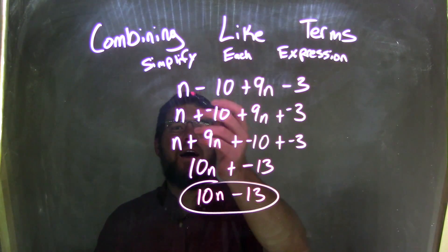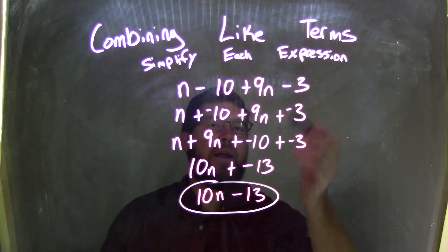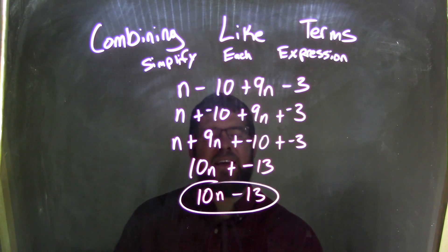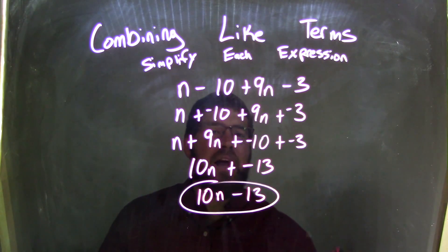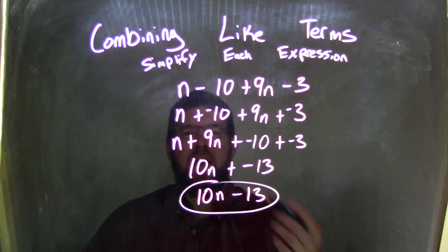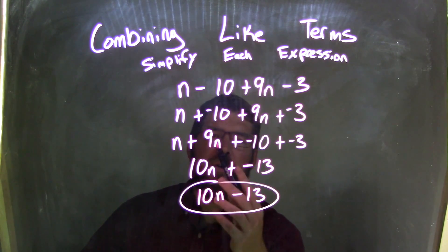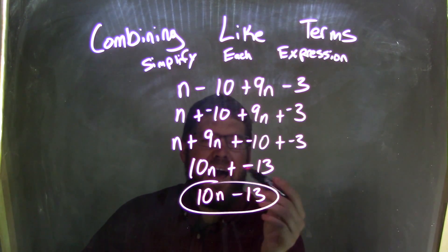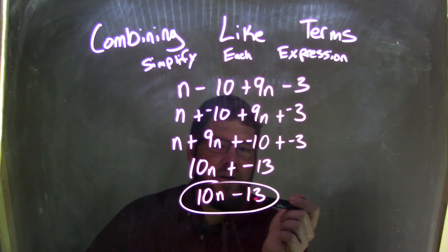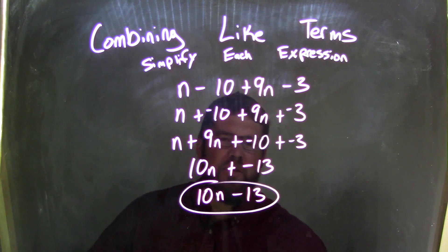So let's recap. We had n minus 10 plus 9n minus 3. I rewrote all of this to be adding a negative, because I find that to be easier to rearrange using the commutative property. So I rearranged all of these, and I got n plus 9n plus a negative 10 plus a negative 3. Now I checked the previous line to see if I had all of my parts, and I did. And so now we're combining our like terms. n plus 9n is 10n, and negative 10 plus a negative 3 is negative 13. Adding a negative is the same thing as subtraction. And so we rewrite this, because it looks neater as 10n minus 13, which is our final answer.